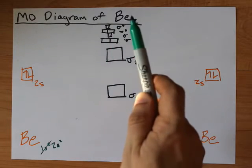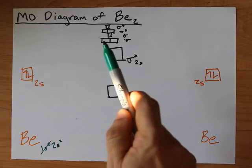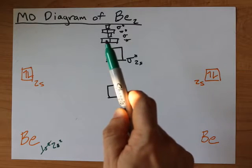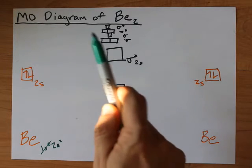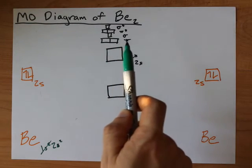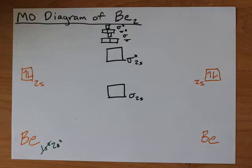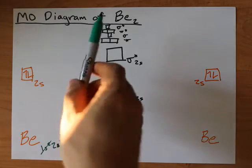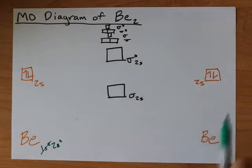But also if this was BE2 with a 2- charge you'd have to put electrons in the next lowest energy molecular orbital and that would be the pi 2p bonding orbitals. In any case BE2 is just this main bit here.